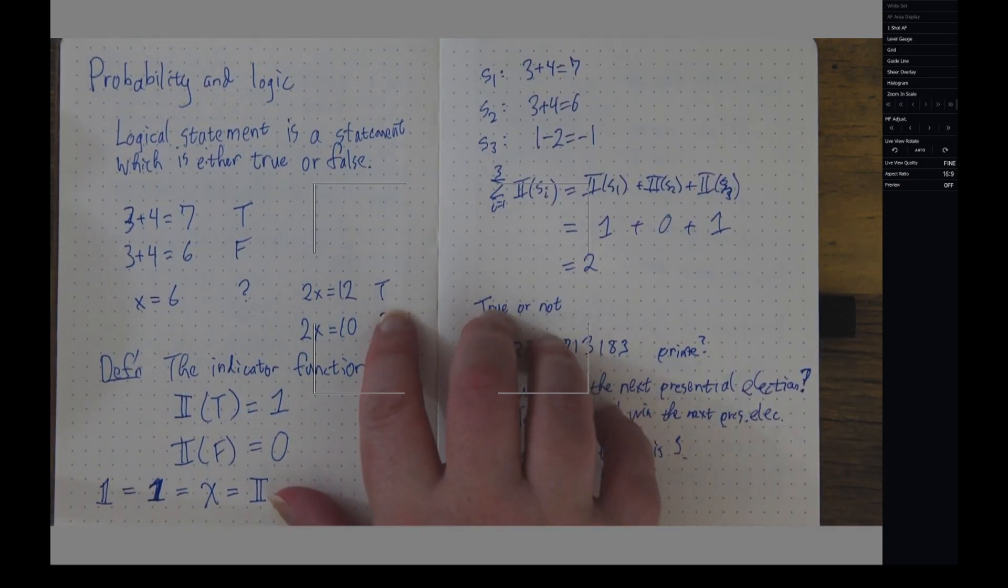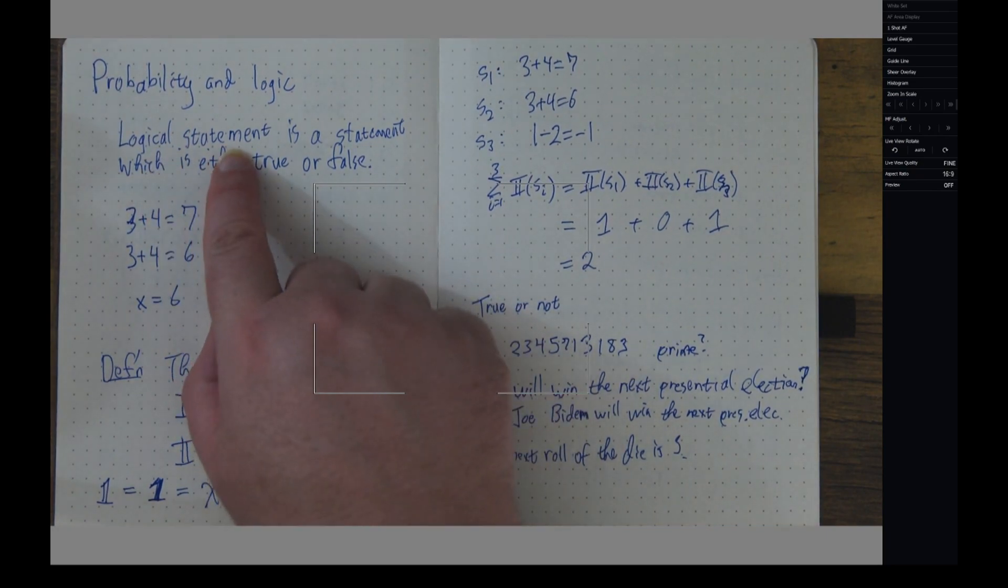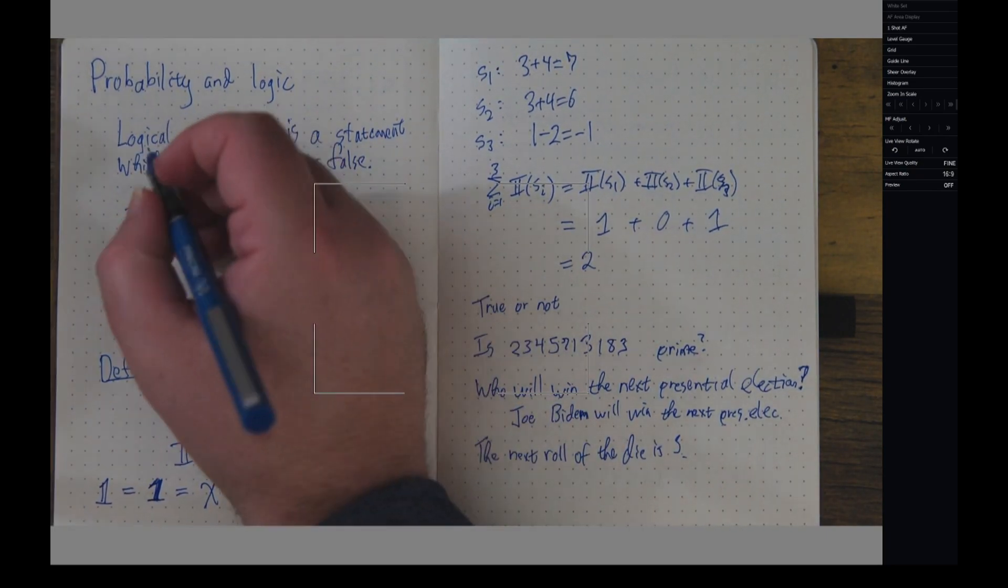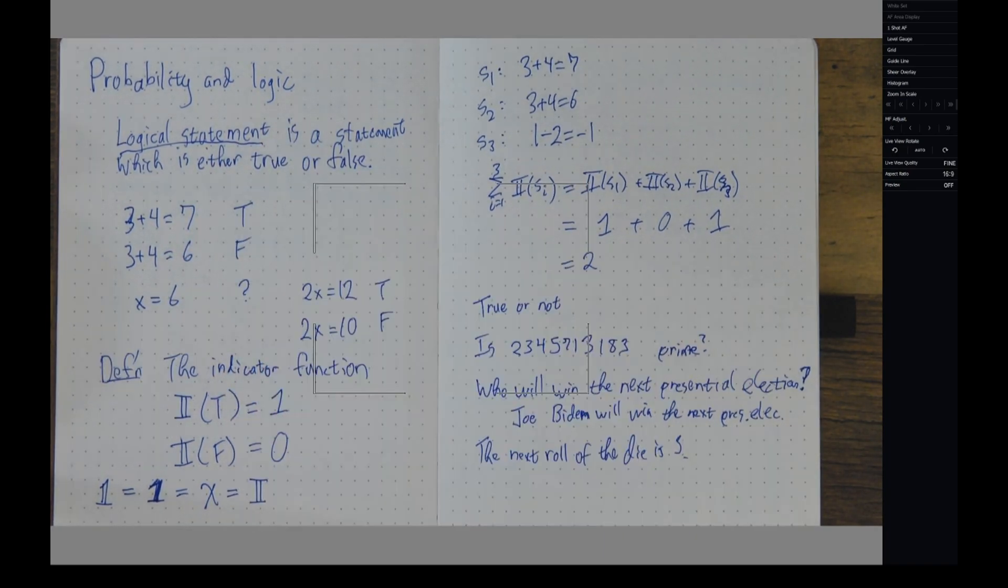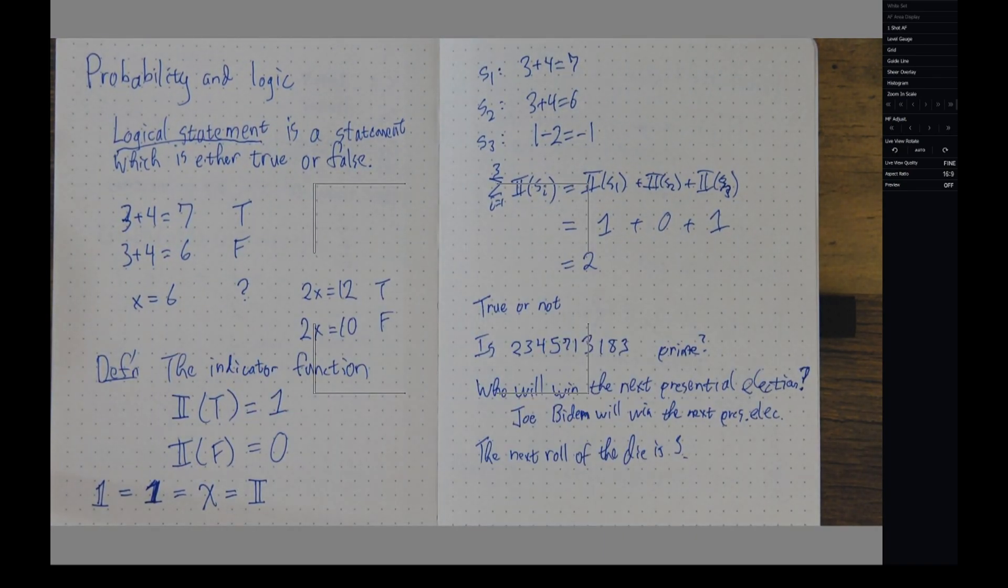We said that for a logical statement, we're working with something which is either true or false. It has to be one of those two things. So, none of these statements about 'this statement is false' or 'all Cretans are liars, I am a Cretan' - I'm only going to worry about statements which I can determine to be either true or false.